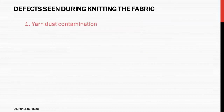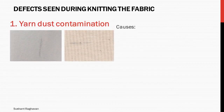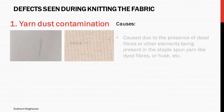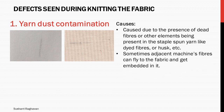Defect seen during knitting the fabric. Yarn dust contamination: caused due to the presence of dead fibers or other elements being present in the staple spun yarn, like dyed fibers or husk. Sometimes, machine fibers can fly to the fabric and get embedded in it.